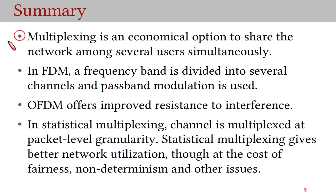To summarize: multiplexing is an economical option to share network resources among several users at the same time. In frequency division multiplexing, the frequency band is divided into several channels and passband modulation is used. OFDM offers improved resistance to interference and better performance by spreading data over multiple subcarriers. In statistical multiplexing, the channel is multiplexed at packet-level granularity, giving better network utilization, although at the cost of fairness, non-determinism, and other issues like congestion.